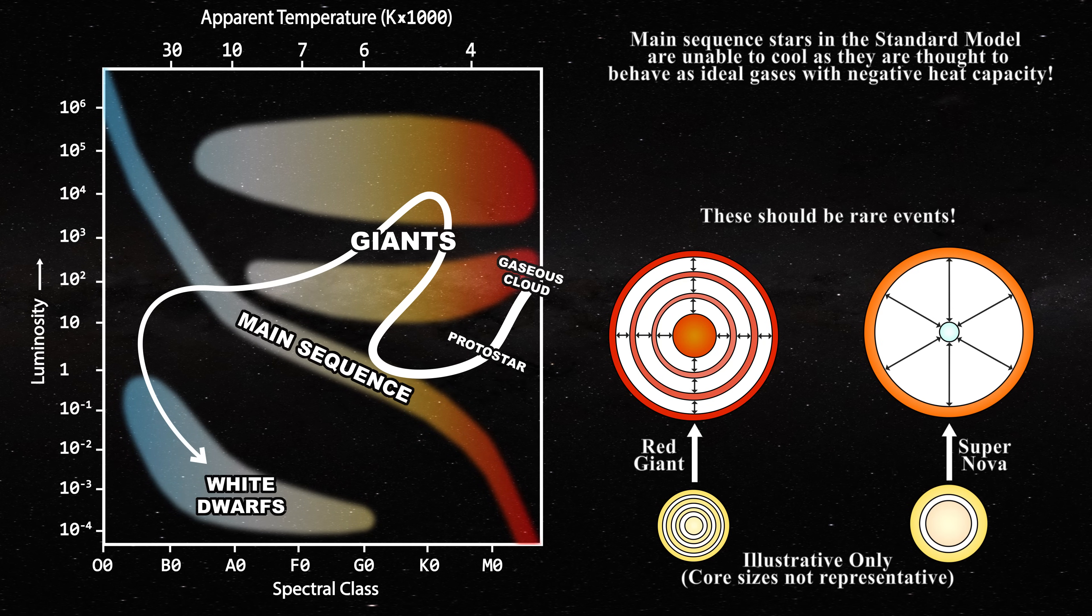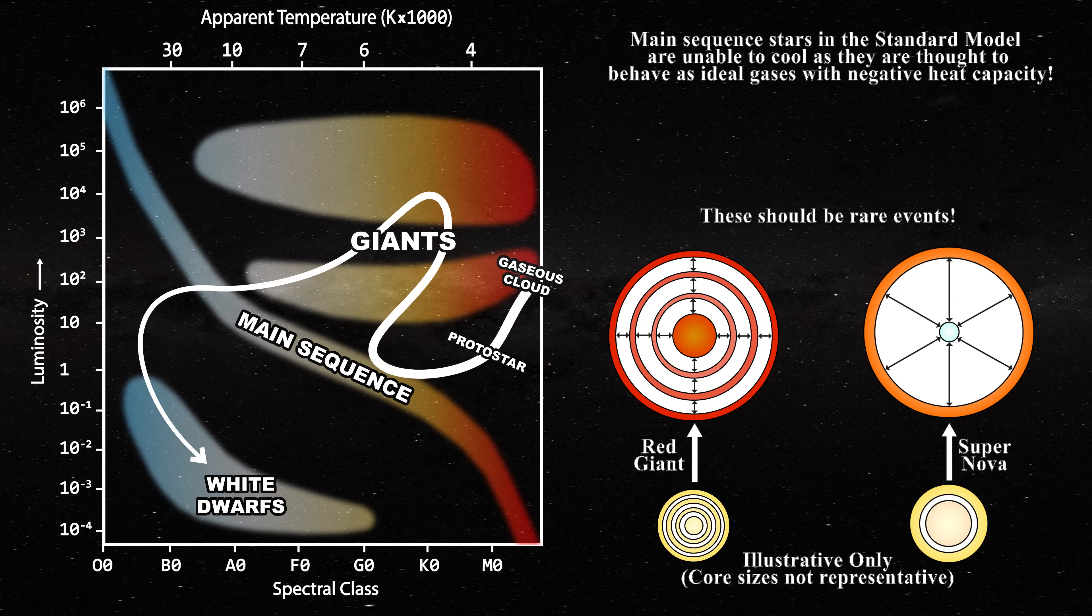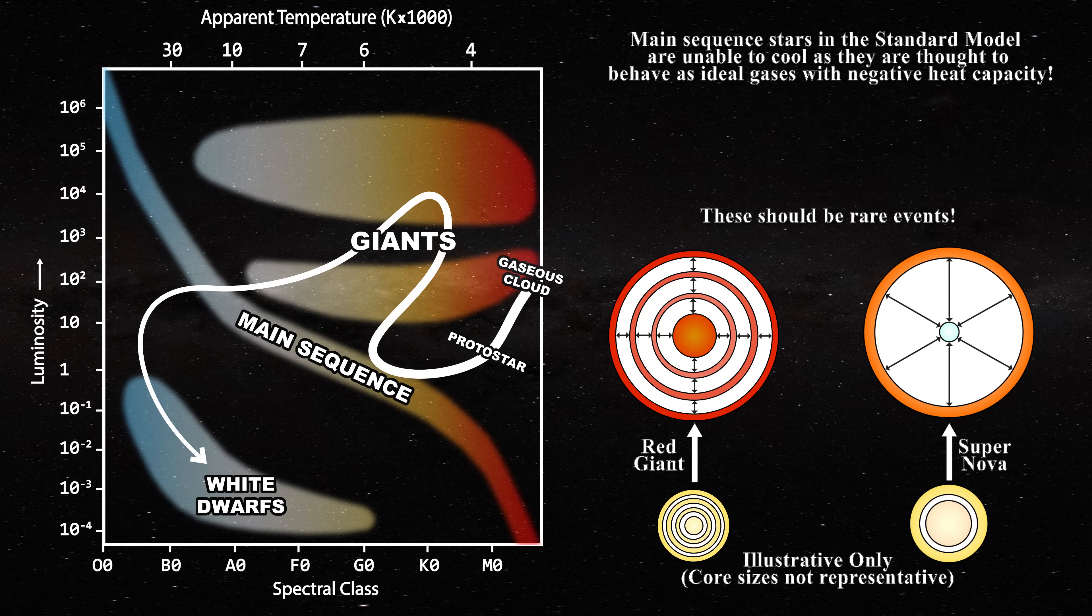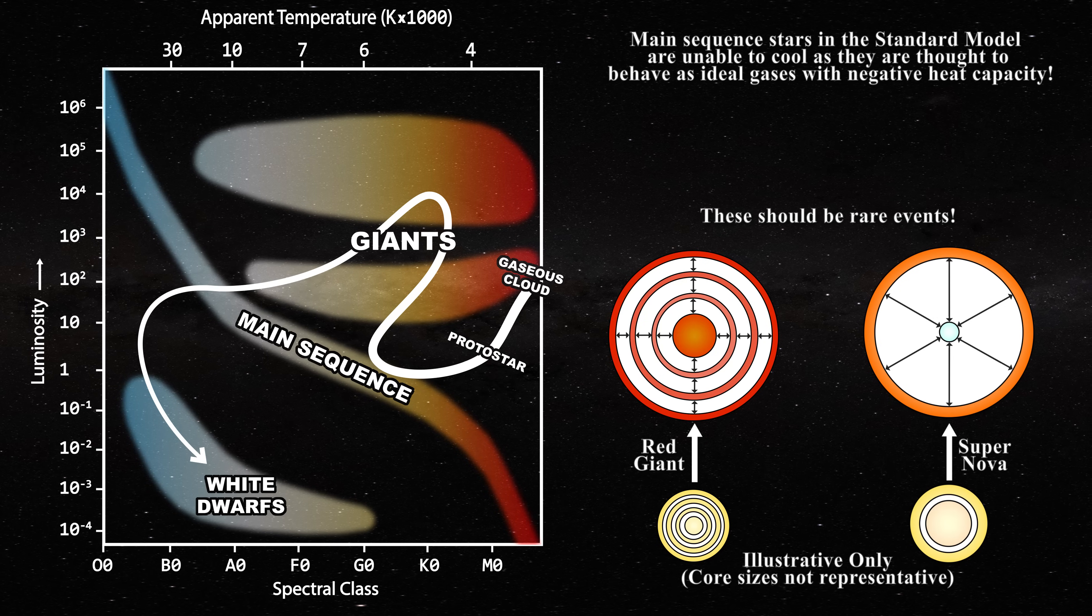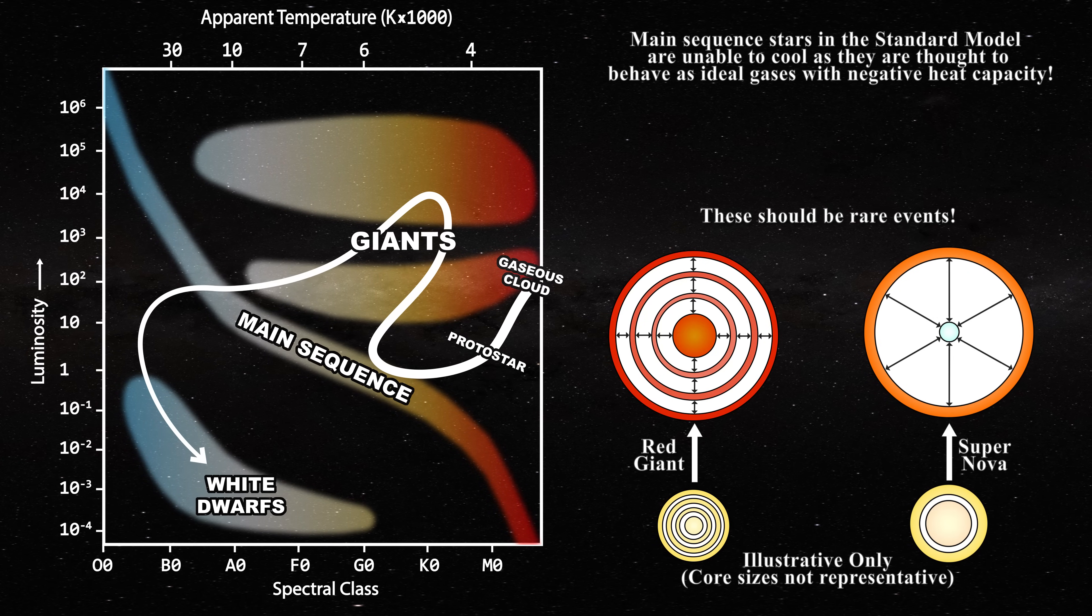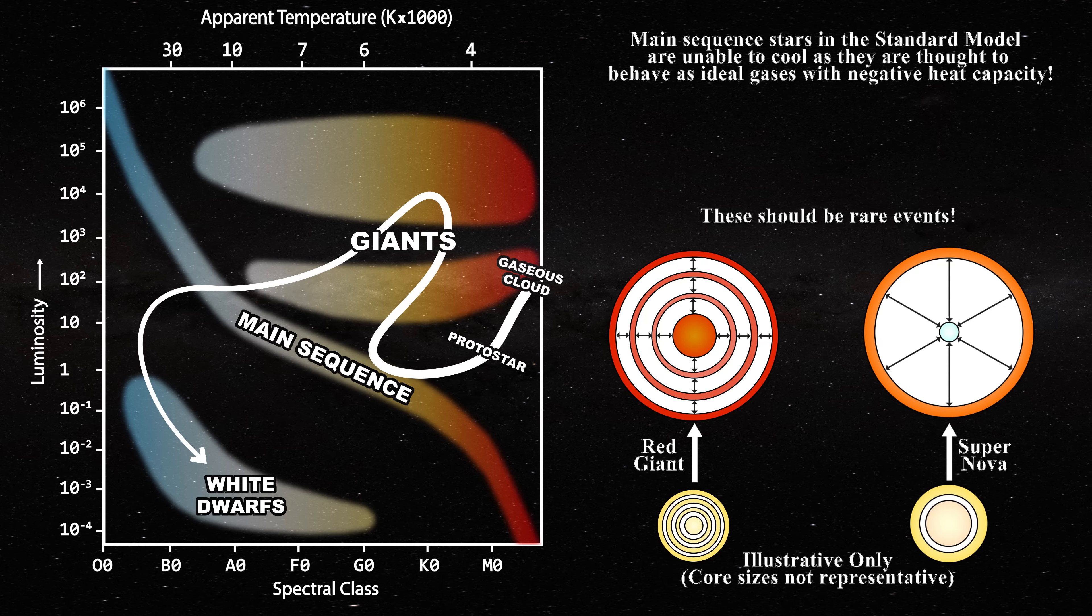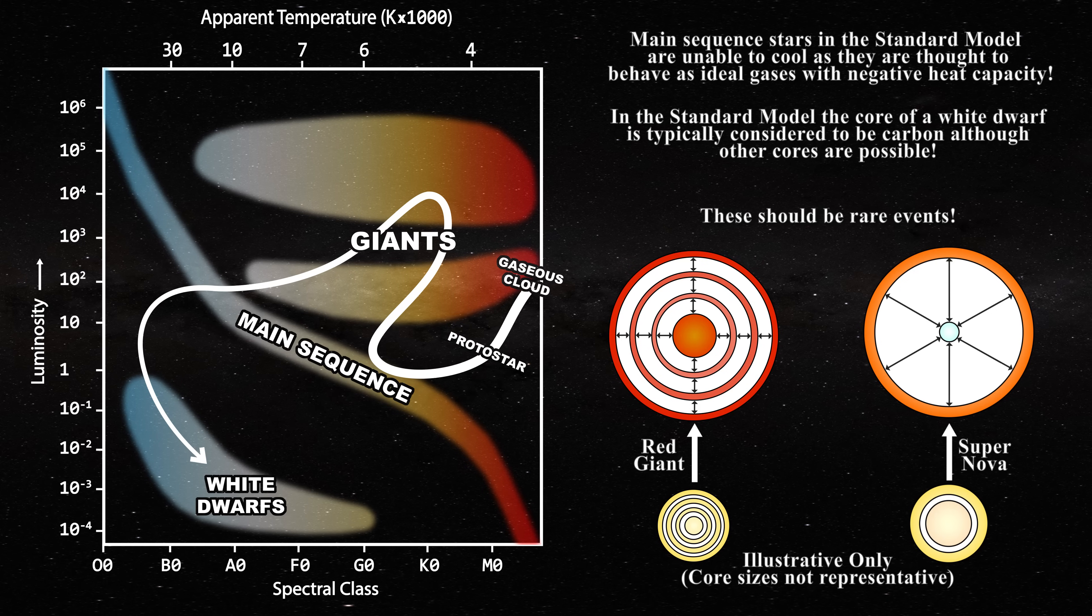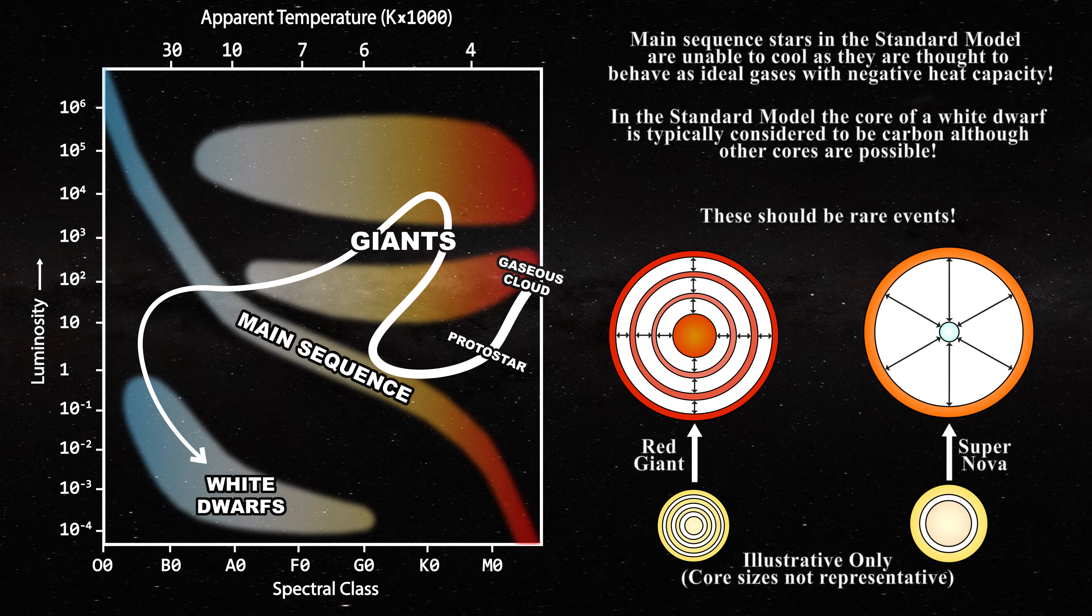In the case of a star like the Sun, it must first become a red giant, then eject a planetary nebula. Once the star runs out of nuclear fuel, it undergoes gravitational collapse into a white dwarf, and only then can it finally begin to cool. In this case, the core of the star is typically considered to be composed of carbon, although other cores are also said to be possible.